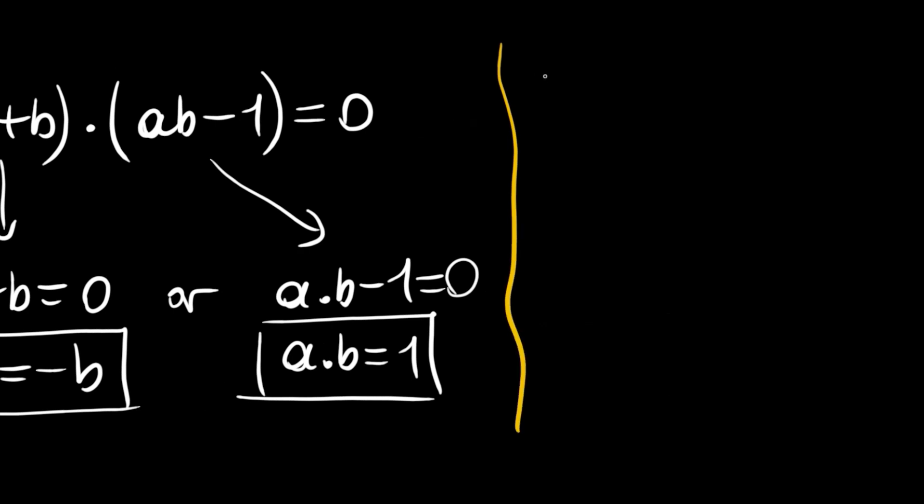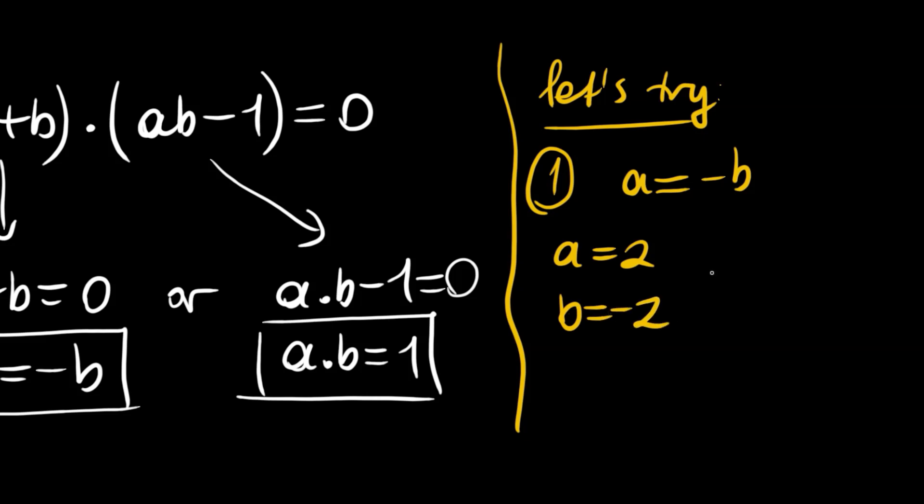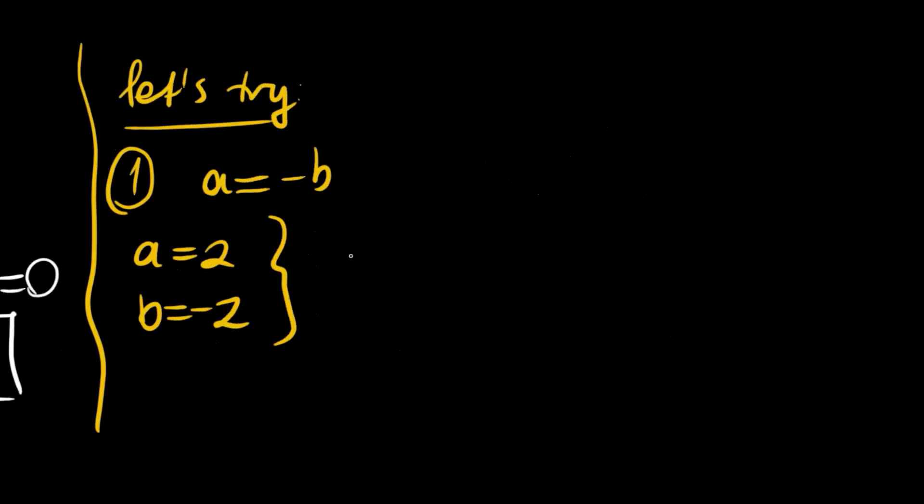For example, let's try for the case a plus b is equal to zero, or a is equal to negative b. Let's say a is equal to 2 and b is equal to negative 2. Then we will have 1 over 2 plus 1 over negative 2, and this is equal to 2 plus negative 2. So 0 becomes 0. For any value like this we will have 0 equals 0.